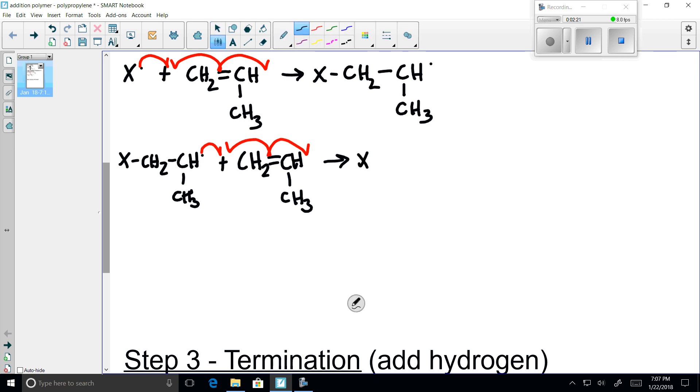Copying out the first monomer. X bonded to CH2. Now, we have our new bond that joins the second monomer and a free radical electron.